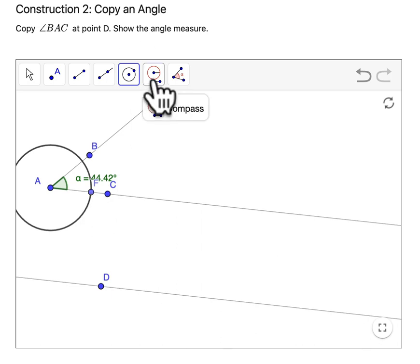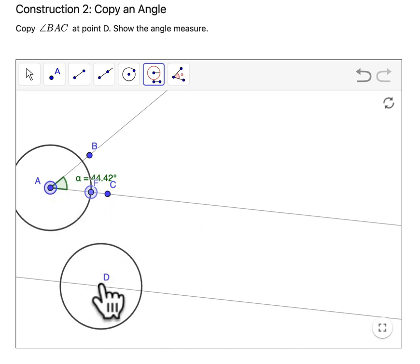And then I have my compass tool. I'm going to click this point F and in the center A. I can drag the compass over here to D. And all I want to do is mark this intersection point.